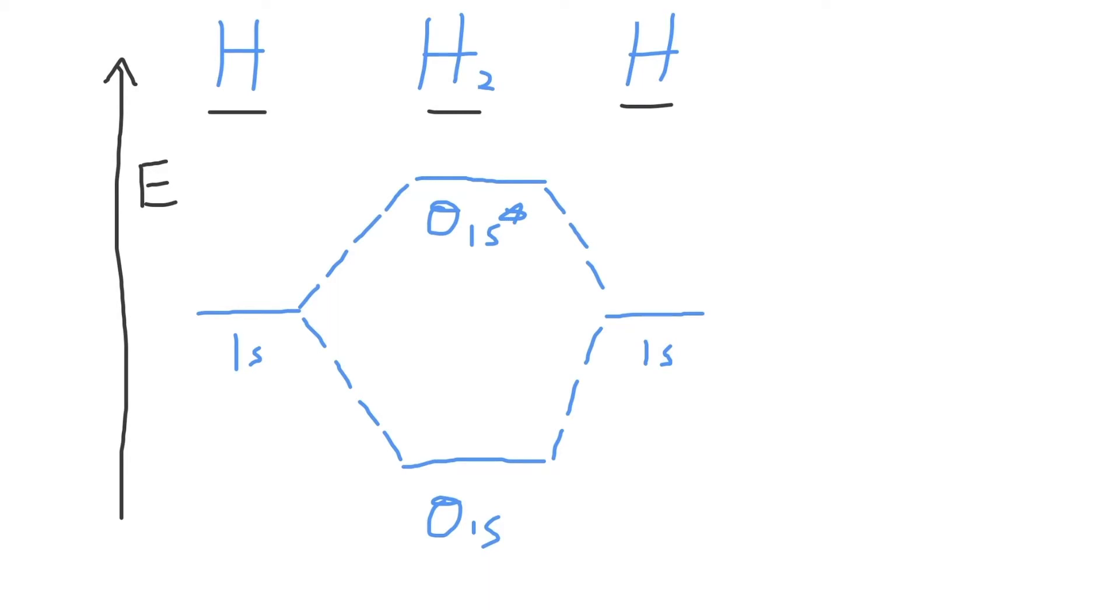Then let's find how many valence electrons each hydrogen atom has. Each hydrogen atom contributes one valence electron. Therefore, the H2 molecule has two electrons in total.